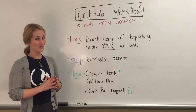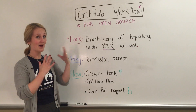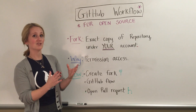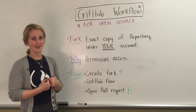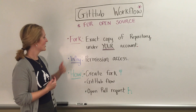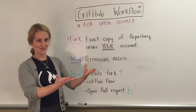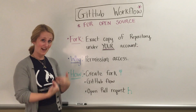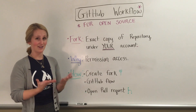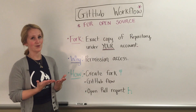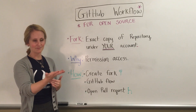When you create a fork on GitHub.com, you're creating a copy of that repository, but under your own account. So you have write access. So let's say I fork FreeCodeCamp's repository — now I have write access to it. I can make commits directly to that repository, but they can't see them on FreeCodeCamp yet.